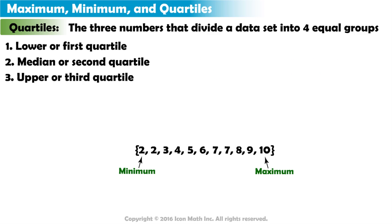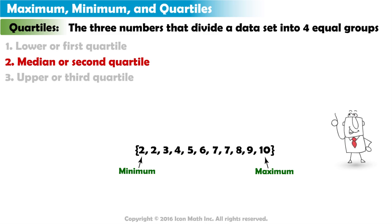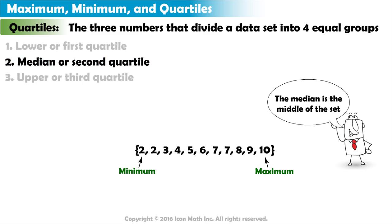To find the quartiles for this dataset, again, we must make sure the dataset is in numerical order. We will begin by finding the median or second quartile. To find the median, we must find the number that is in the middle of the dataset. There will be the same number of values above and below the median. Notice the median for this dataset is 6, because there are five values on each side of the data value 6.